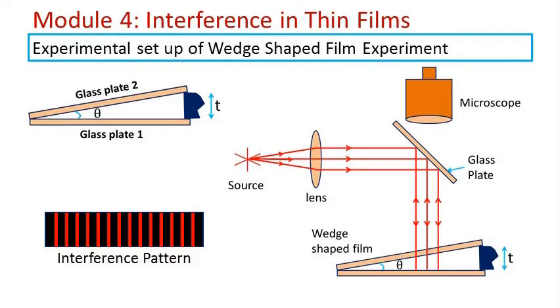In order to get the interference pattern using wedge shaped film, what is the experimental setup? We will discuss now. The wedge shaped film is obtained by keeping two glass plates one above the other in such a way that the upper glass plate is inclined at an angle theta with respect to the lower glass plate. This angle of inclination theta can be obtained by keeping a thin object between the two glass plates.